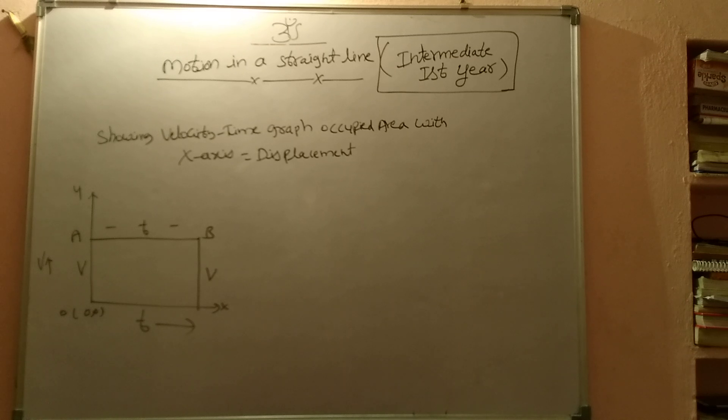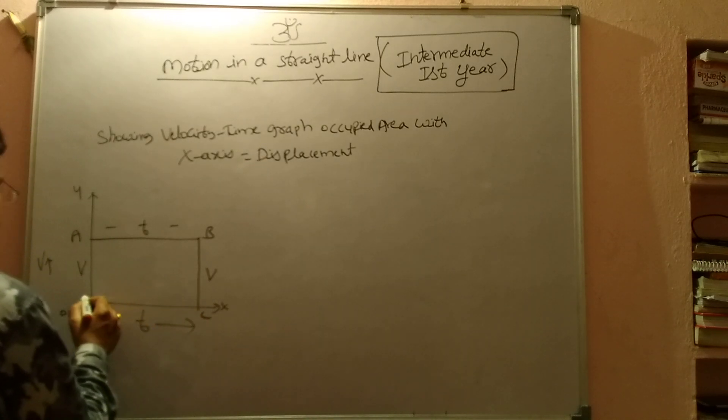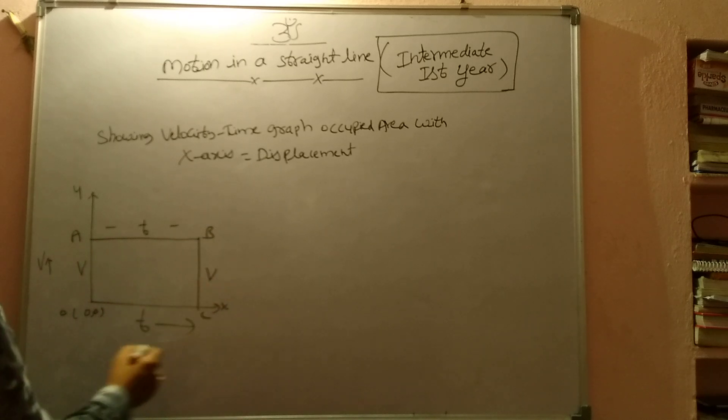Now I am taking one body moving with uniform velocity. If it is moving with uniform velocity, initial velocity Oa is V and final velocity is also V. So this point I am stating as C. So Bc is also V. Initial velocity Oa is V, final velocity Bc is V.